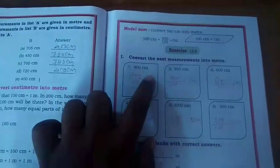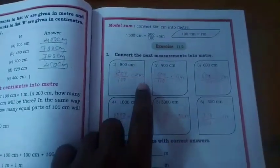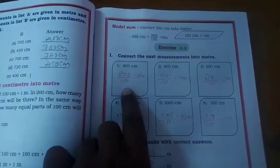The first question: 800 cm. Since 100 cm is equal to 1 m, 800 cm is equal to 8 m. We divide 800 by 100 because 1 m equals 100 cm.